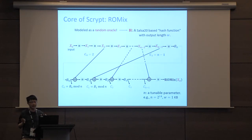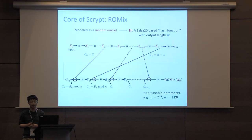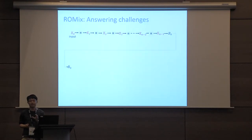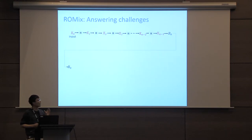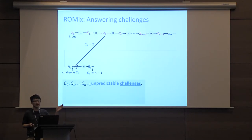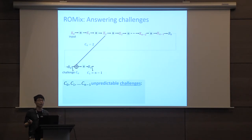RawMix invokes the hash function H for 2n times, where n is a tunable parameter. A practical parameter choice is n equals 2^14 and W equals 1 kilobyte. The interesting part in the evaluation of RawMix is what happens in the second phase. The useful way to think of this is to see the C indices as unpredictable challenges that determine which values are needed to proceed in the computation.